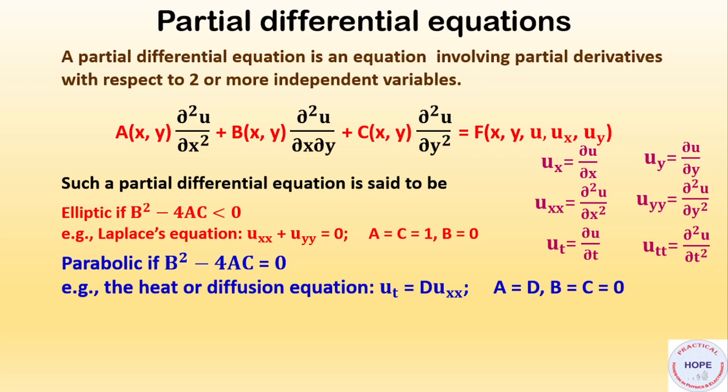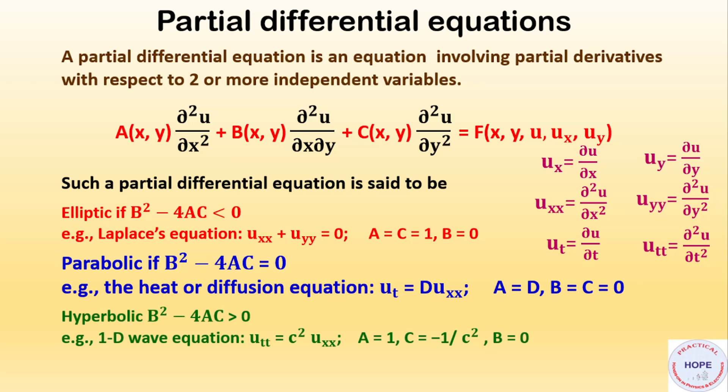Next, parabolic, if B squared minus 4AC equals zero. Example: the heat equation, u_t equals D times u_xx, where capital D is a constant depending upon the material. In this case, since B and C are zero, B squared minus 4AC equals zero. And finally, hyperbolic: B squared minus 4AC greater than zero. Example: the one-dimensional wave equation.